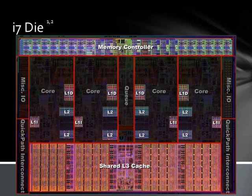Intel clearly spent a lot of die real estate on the memory hierarchy. The memory controller uses about 11% of the space on the die. The four L1 data caches together take up 2%, the L1 instruction cache uses 1% total, while the L2s consume about 3%. Finally, the L3 occupies nearly 27% of the space on the die. Together, cache makes up 33% of the die area, or 44% if the memory controller is included.